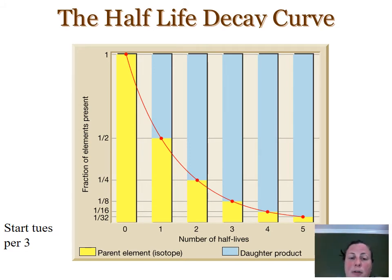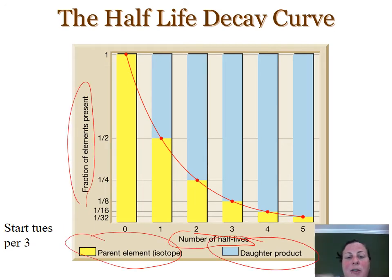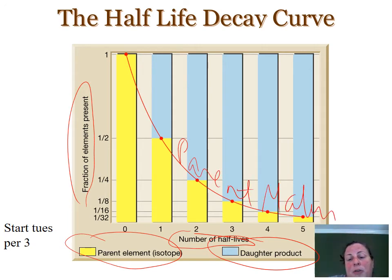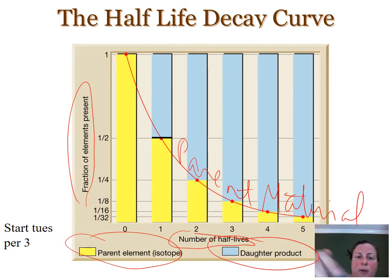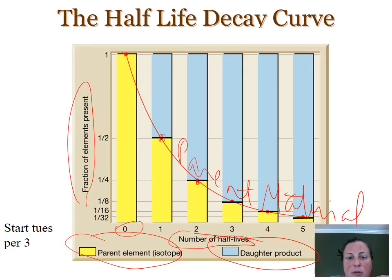This is our half-life decay curve, and we are able to graph the number of half-lives to the fraction of elements — we can do this for both the parent isotope and the daughter product. This curve shows the decay — it shows the amount of parent material, which of course is decreasing because we lose parent material on each half-life. At the start, when the rock or fossil first comes into existence, you have 100% of that parent remaining. At the first half-life, you lose half; at the second half-life, you lose another half; and so on.